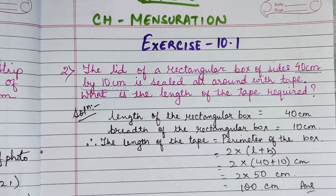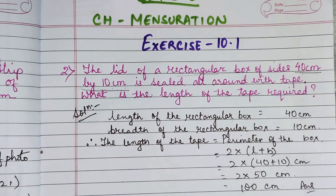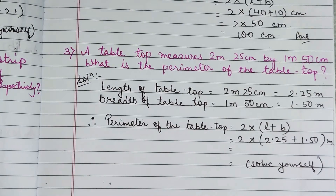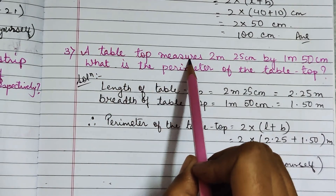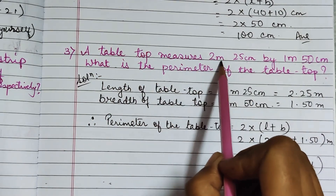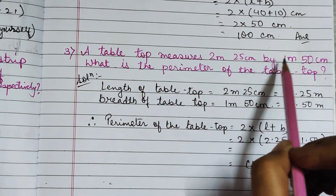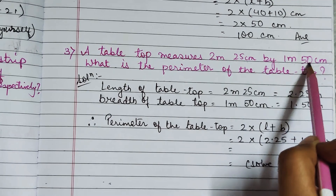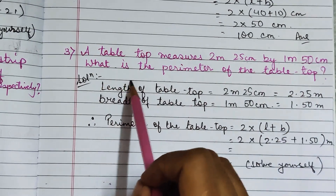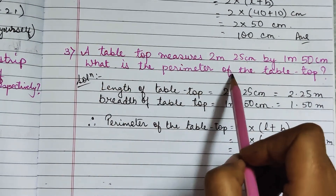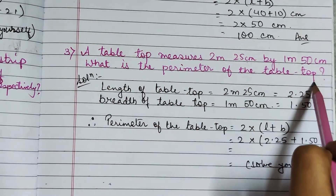Now let us see the next question, that is question number 3. Question number 3 says: a table top measures 2 meter 25 cm by 1 meter 50 cm. What is the perimeter of the table top?